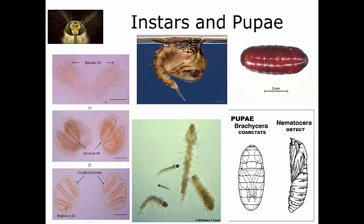Nematoceran larvae are harder to differentiate and we look at them by size, using the mosquito as the type specimen. First instar mosquito larvae are 0.5–1.5 mm long; second instars are 1.5–2.5 mm; third instars are 2.5–3.5 mm; and fourth instars are above 3.5 mm. So identification is essentially size-based, though certain species have additional morphological characteristics that can differentiate instars.